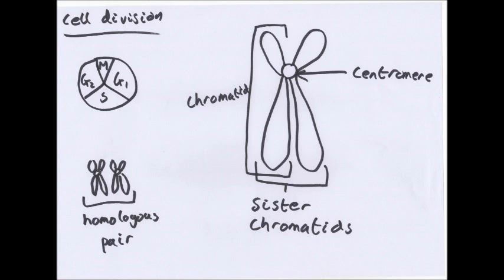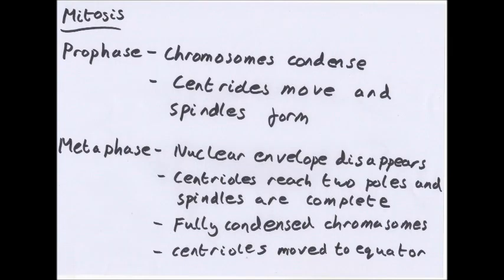There's also cytokinesis which occurs, and that's when the cytoplasm divides. Four stages: prophase, metaphase, anaphase, and telophase. Chromosomes condense and become visible. Each chromosome is made up of two chromatids as I showed you previously. Centrioles move and spindles start to form.